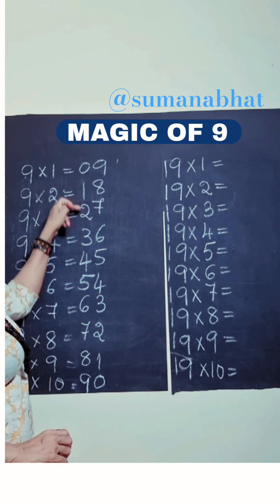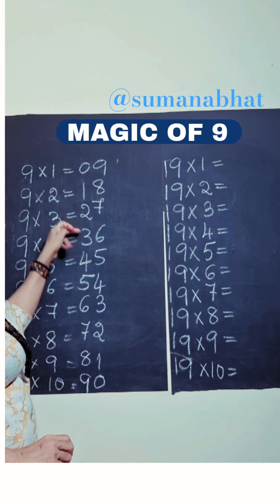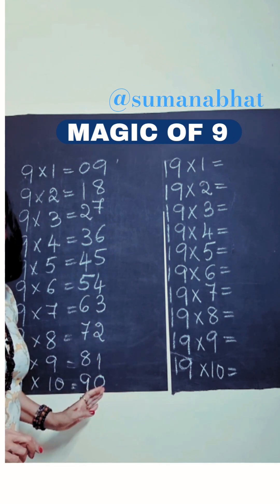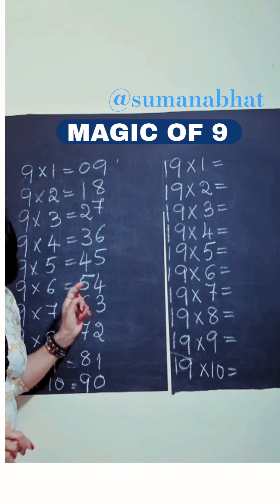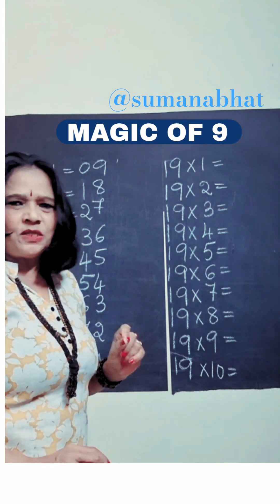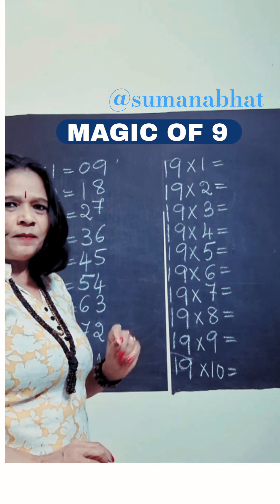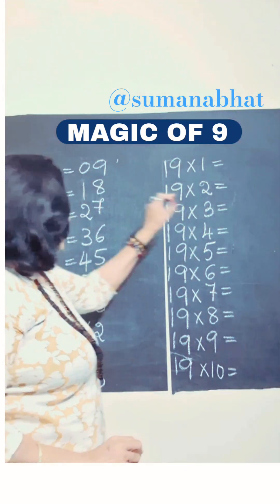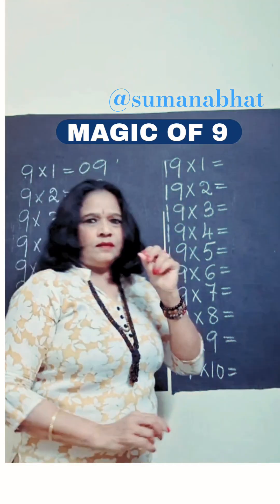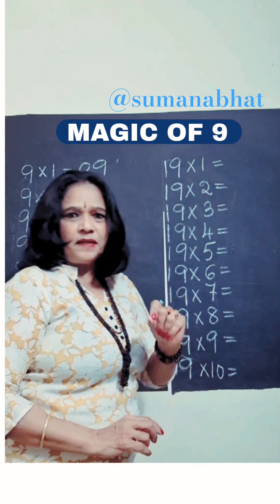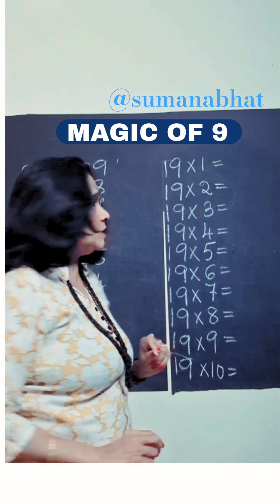9 ones are 9, 9 twos are 18, 9 threes are 27, and so on. This is how we can write the multiplication tables of 9 — very easy! And now let us see the tricks for writing the multiplication tables of 19.